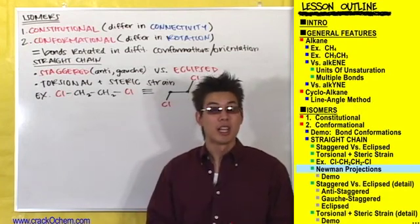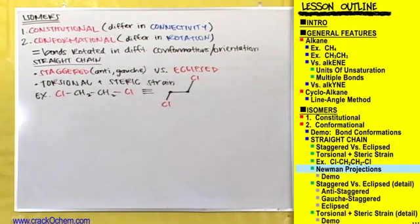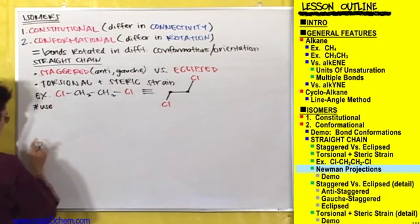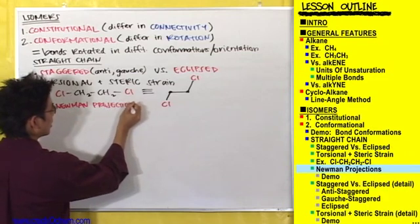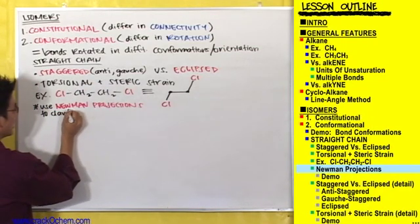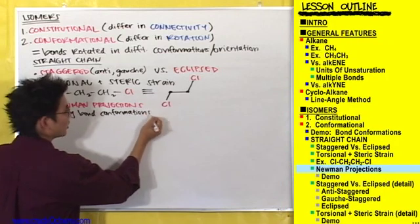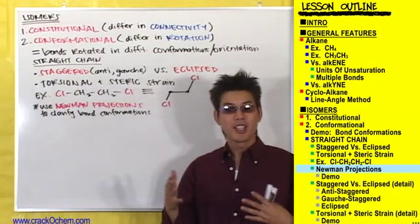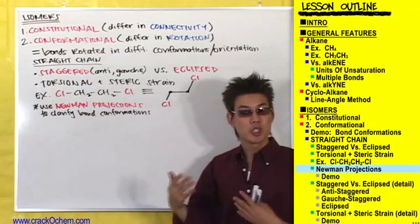We use Newman projections to help see conformational isomers more clearly. We use Newman projections to clarify bond conformations. The goal with conformational isomers is to be able to tell exactly where bonds and atoms are with respect to one another, because bonds and atoms in one orientation can be higher or lower in energy than in another orientation.